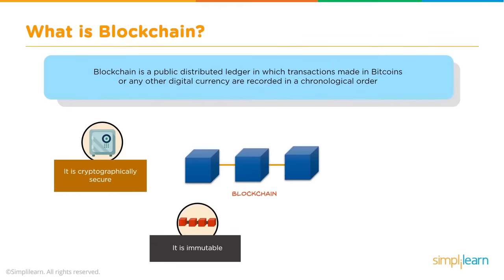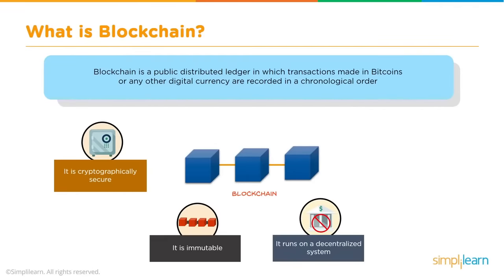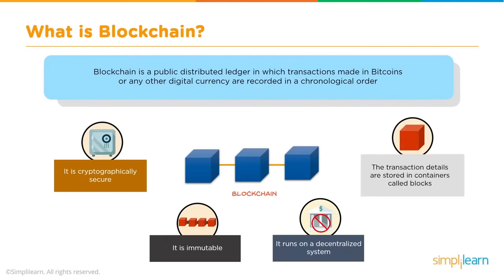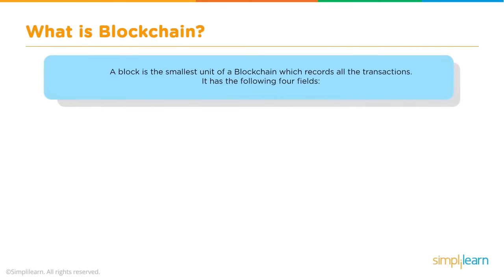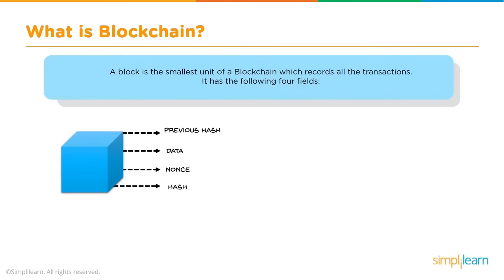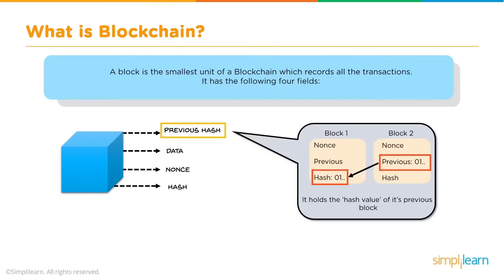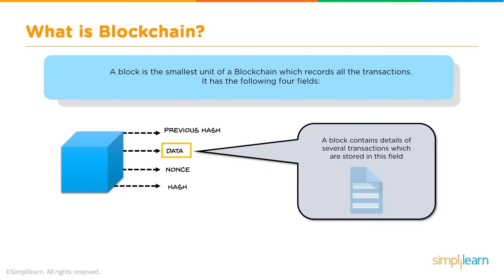Transactions are stored in containers called blocks. A block is the smallest unit of a blockchain that records all transactions. The basic structure of a block has four fields: previous hash (which stores the hash of the previous block, linking blocks together), data (the aggregated set of validated transactions included in the block), nonce (a random value used to vary the output of the hash value in the proof-of-work consensus algorithm), and hash (the resultant value generated by passing previous hash, data, and nonce through SHA-256).